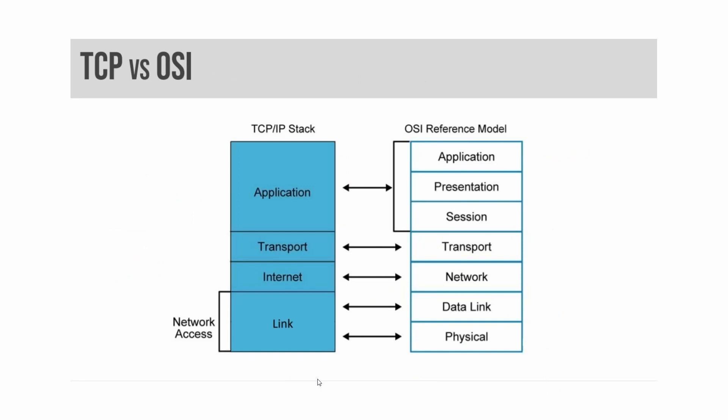The TCP/IP application layer combines the session, presentation, and application layers of the OSI model. Most of these protocols use a client-server architecture where a client connects to a listening server, such as SSHD. The clients and servers use either TCP or UDP, or sometimes both, as a transport layer protocol. TCP/IP application layer protocols include Secure Shell, Telnet, FTP, and many others.